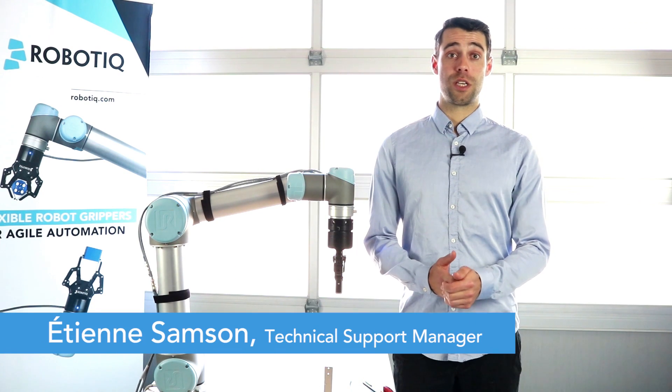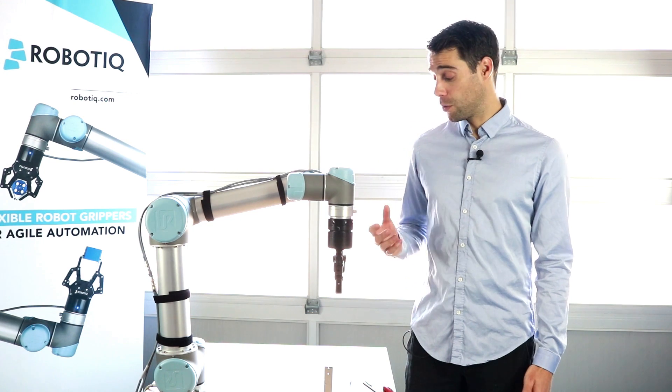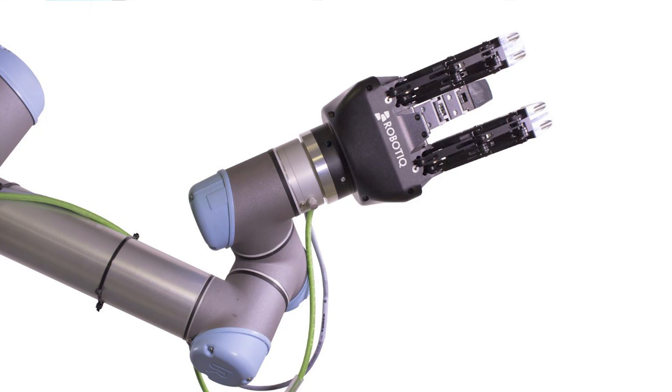This video will explain how to use the object detection feature of the Robotiq grippers. Note that this video is done with a two-finger gripper, but the same logic applies with the three-finger.